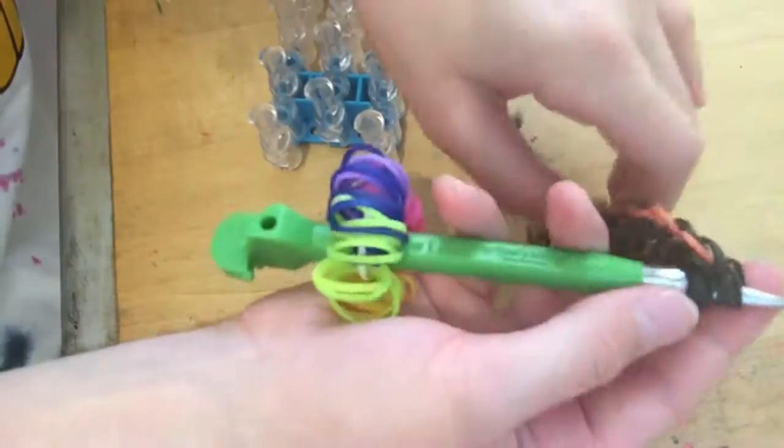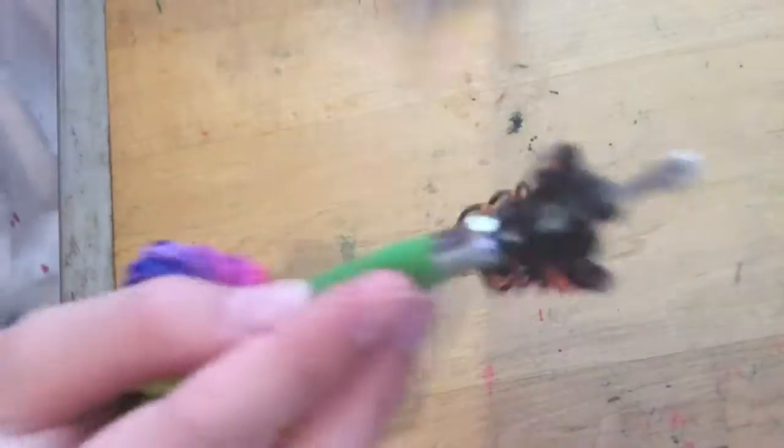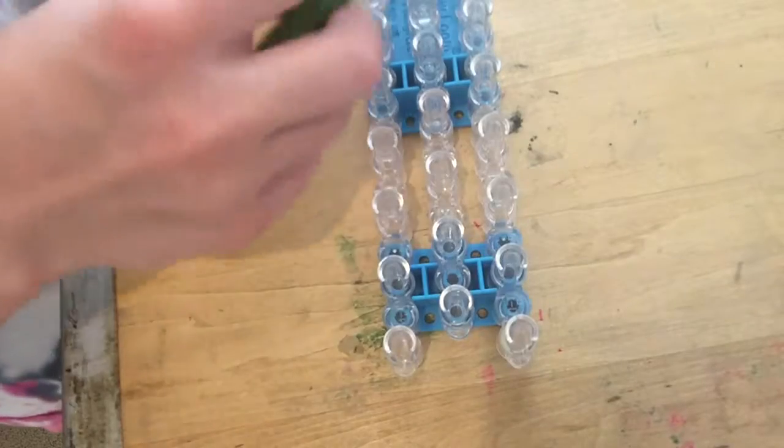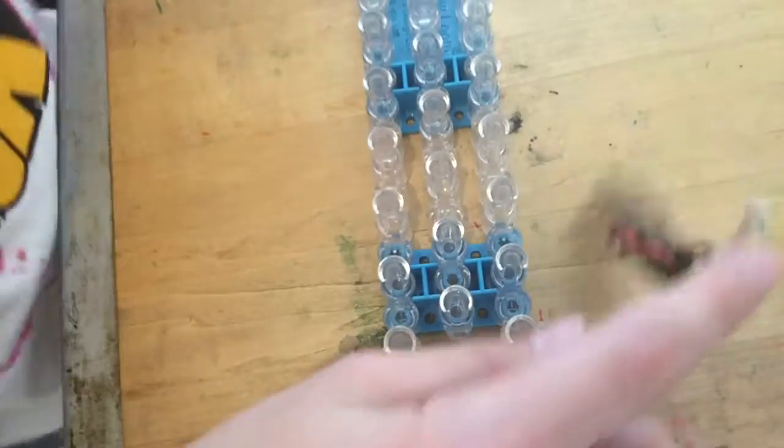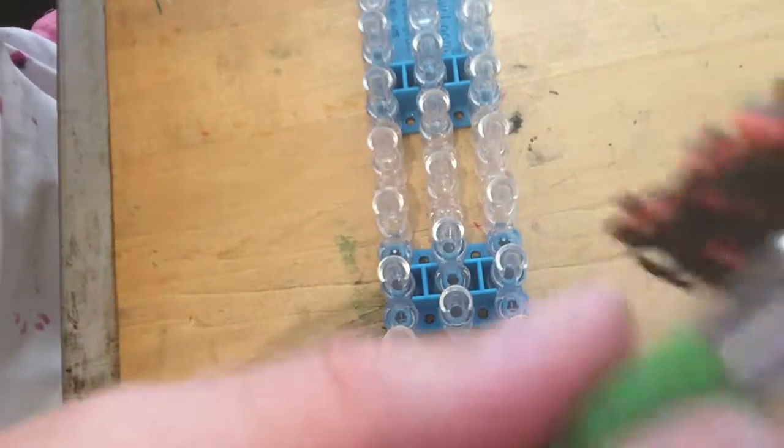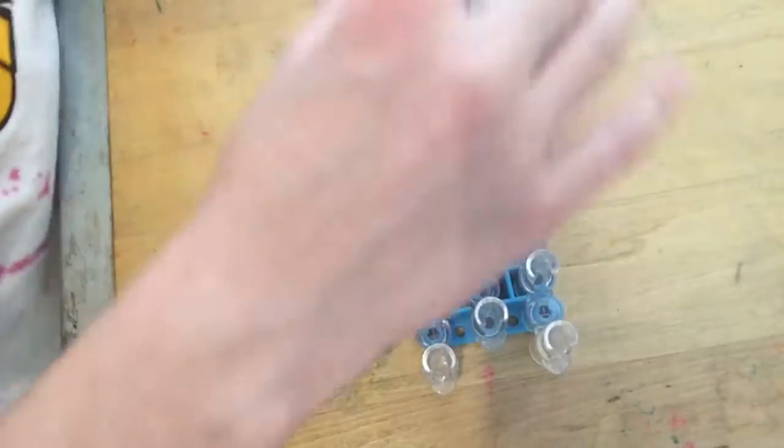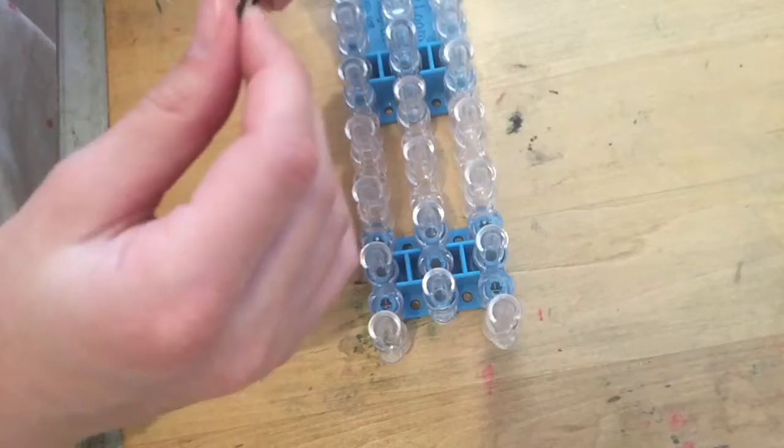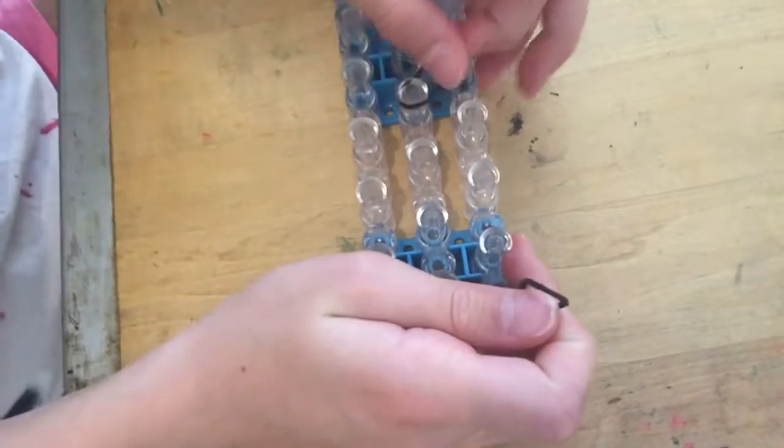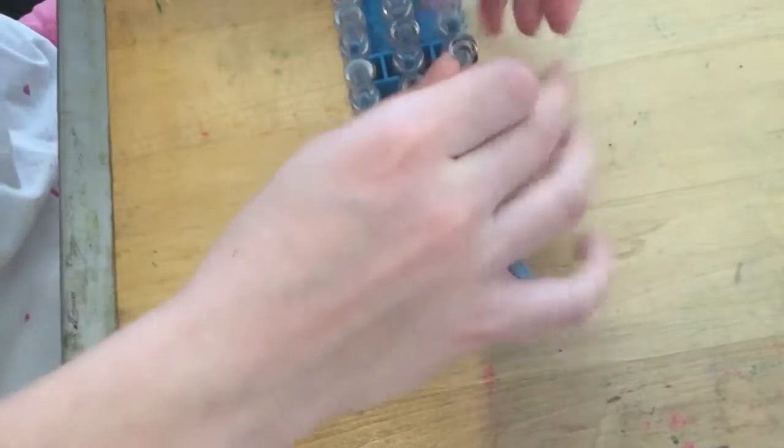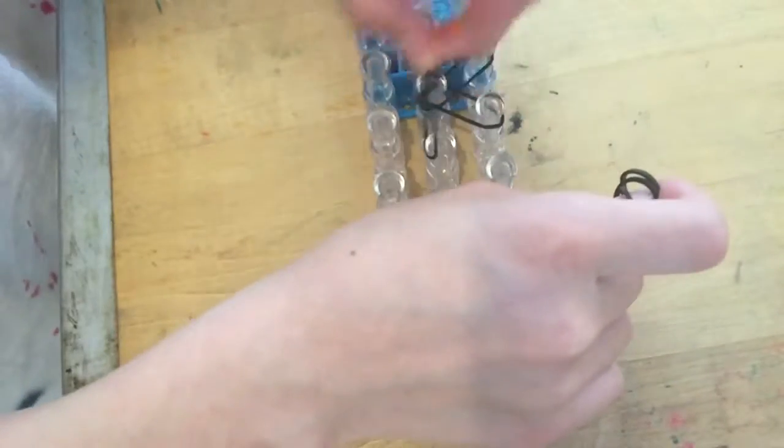If you want to do a keychain, just do a single pull through band and tie that off the keychain. I'm going to extend it a little bit so it can be a bracelet for my sister. So I'm going to start here and just start a single band.